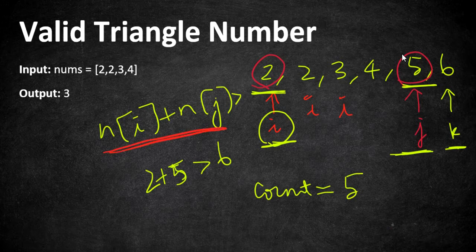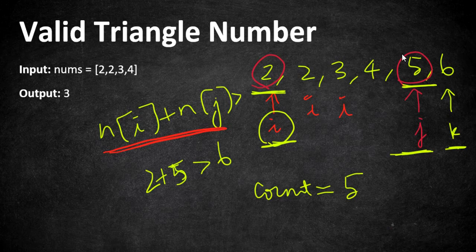In that case, whenever you add the value at i and j, it is going to be greater than k for sure. So you can actually form by keeping 2, 5, 6, then 3, 5, 6, and 4, 5, 6 as triplets. As you increase i, the value is also going to increase to this sum.